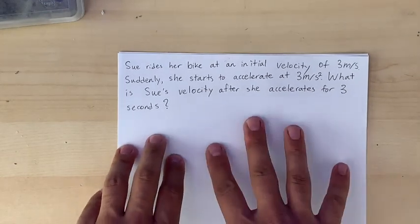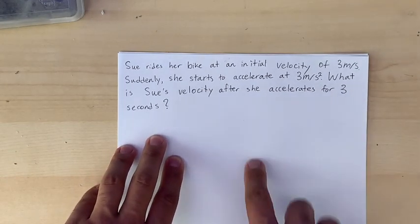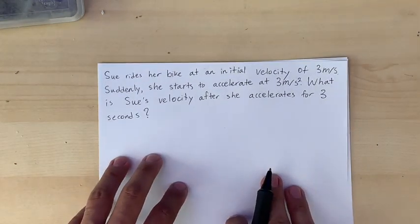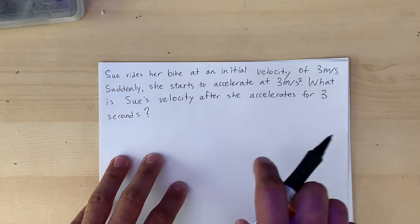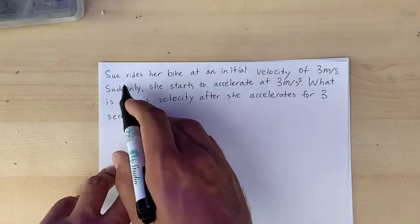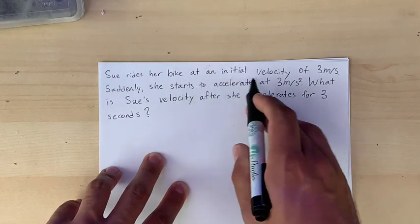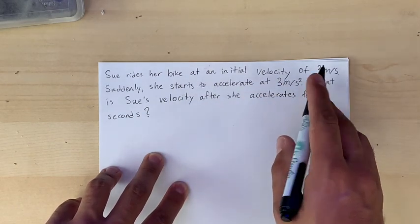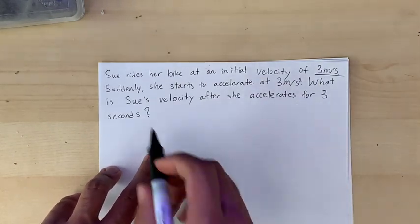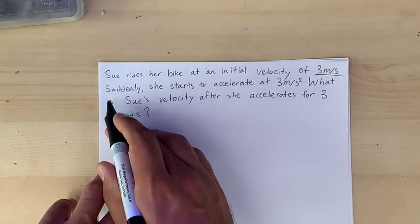Here is our classic physics question, and as I read it through I'm going to make sure that I keep an eye out for every single number that they give us. So Sue rides her bike at an initial velocity of three meters per second. That's a number so I'm gonna underline it just so I remember.